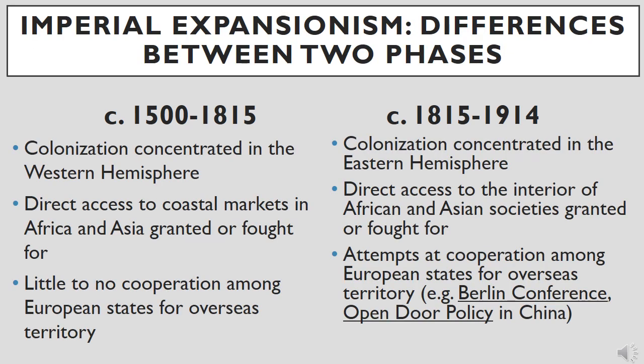During the first phase of maritime empire building, European states explored oceans and eventually established their first maritime empires between 1500 and 1815, tending to concentrate the development of their settler colonies in the Western Hemisphere. Portuguese, Dutch, French, and English trade posts were established throughout the Eastern Hemisphere well before 1815, and the Spanish colonized the Philippines well before the 1815 mark. However, the general trend was the overwhelming concentration of colonial empire building in the Caribbean and the Americas of the Western Hemisphere between 1500 and 1815.